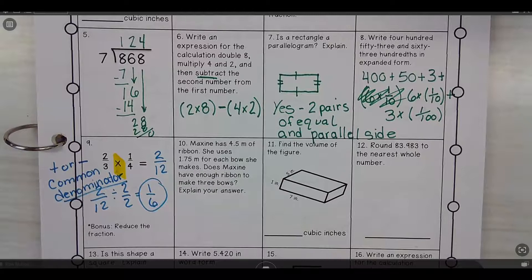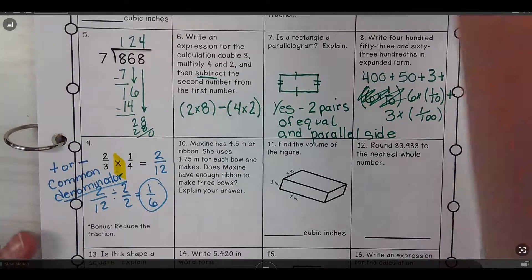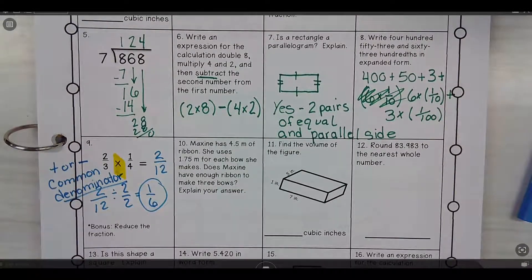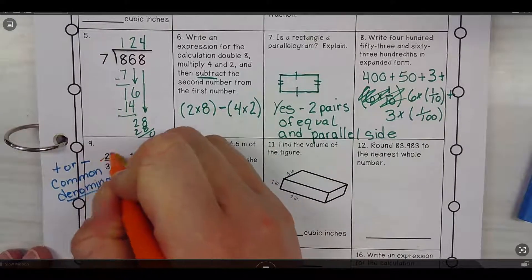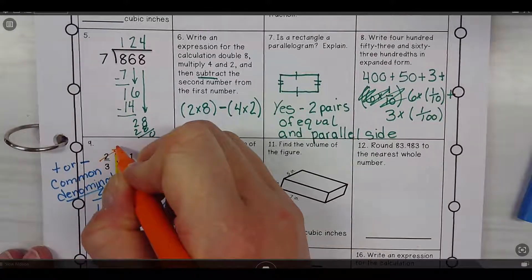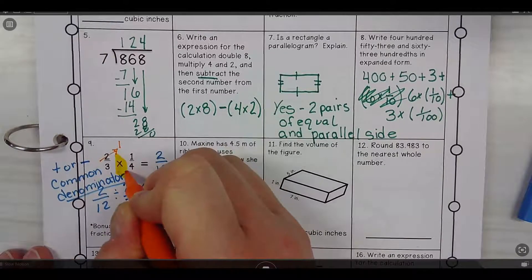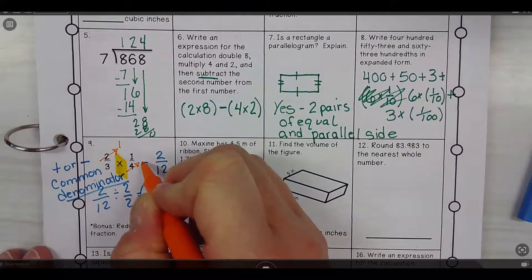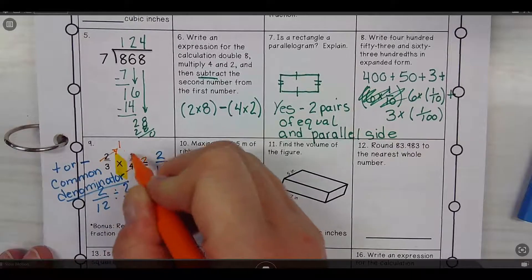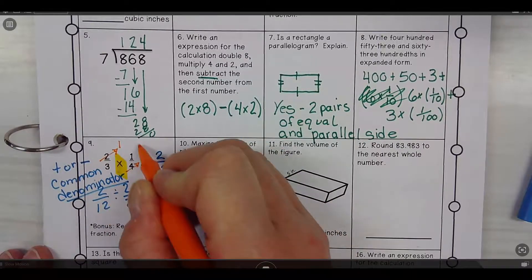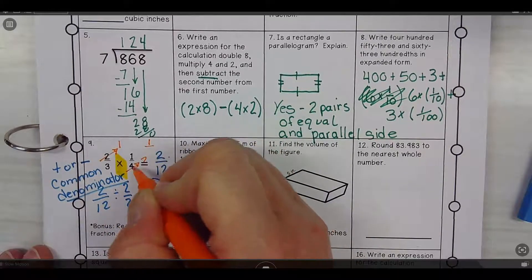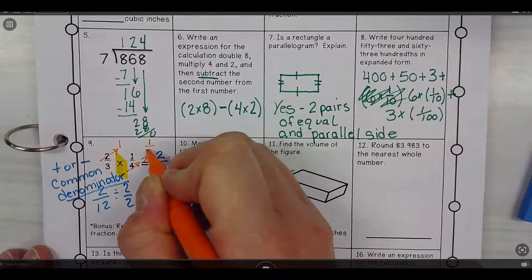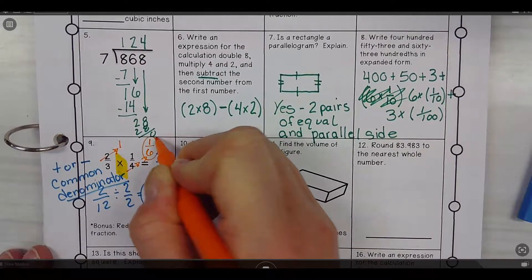So you totally could have gotten one-sixth a different way. My friend said I could cross multiply. Two divided by two gives me one. Four divided by two gives me two, so I have one times one, which would be one, and then three times two, which would give me six. Yep, so that would give me the same answer also.